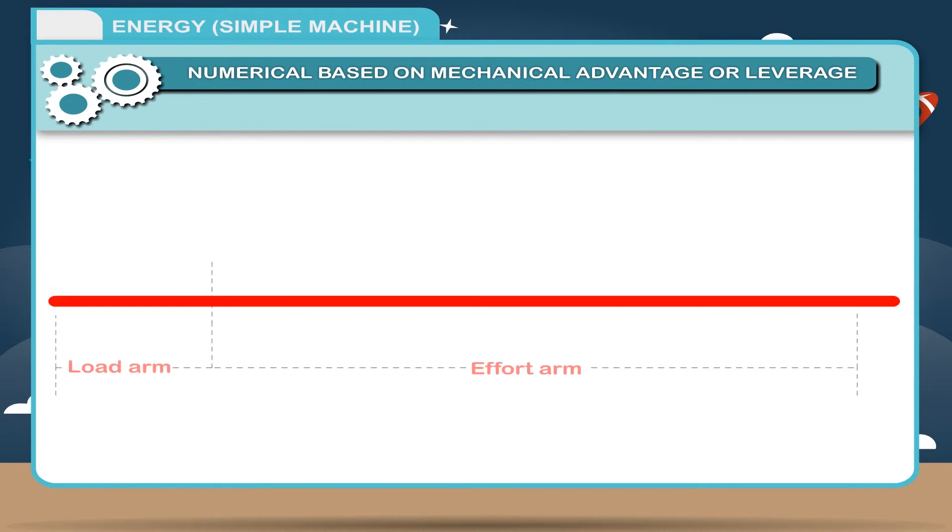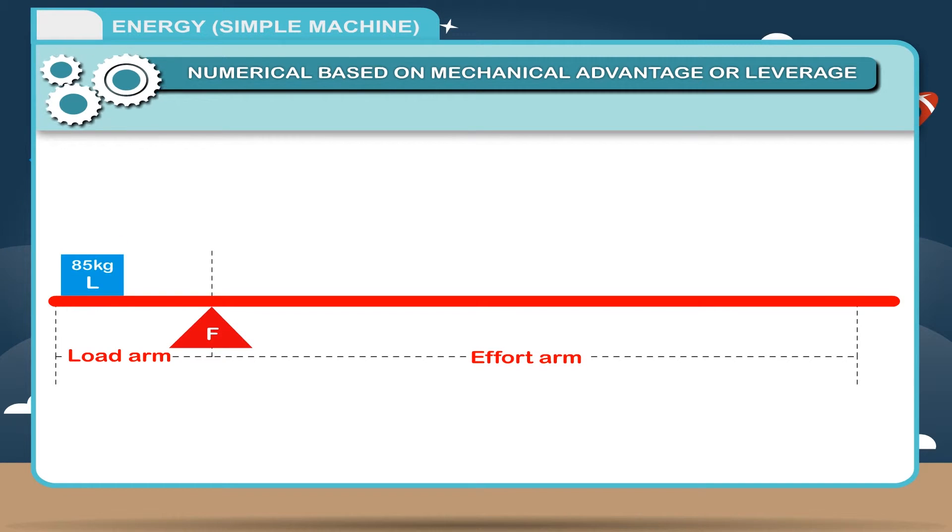Solved example: Taran uses a force of 85 kg weight at a distance of 500 cm from the fulcrum of a crowbar to lift the log of wood placed 50 cm away from the fulcrum. What is the weight of the log and what is its mechanical advantage?